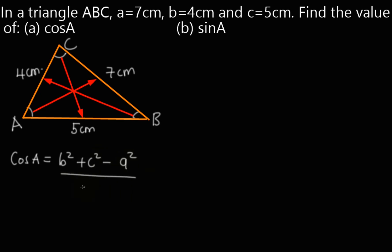everything divided by 2bc. This is equal to, we substitute for b, c, and a. So we shall have 4² plus 5² minus 7² everything divided by 2 × 4 × 5.